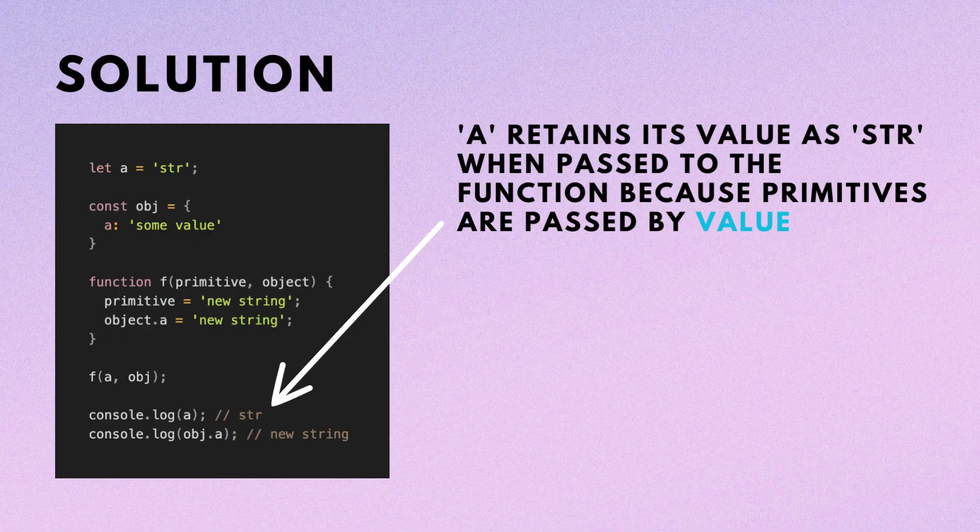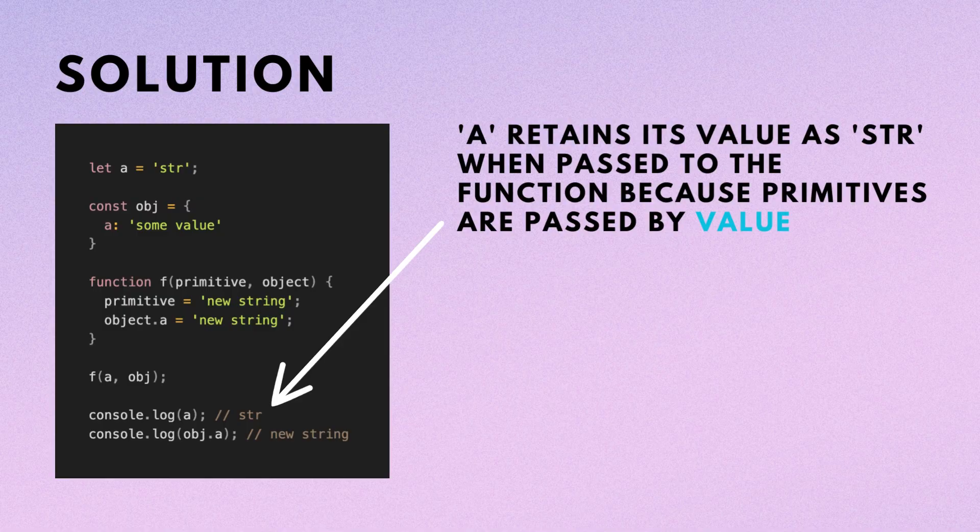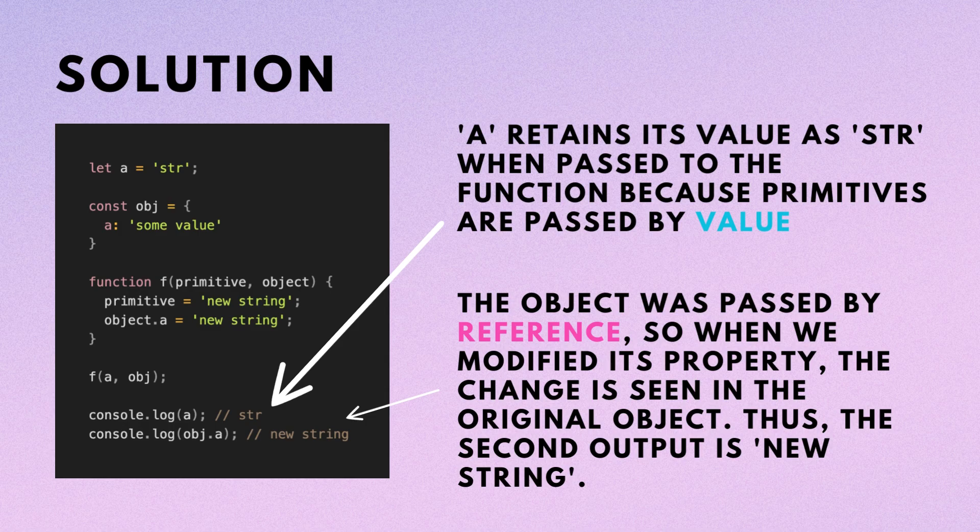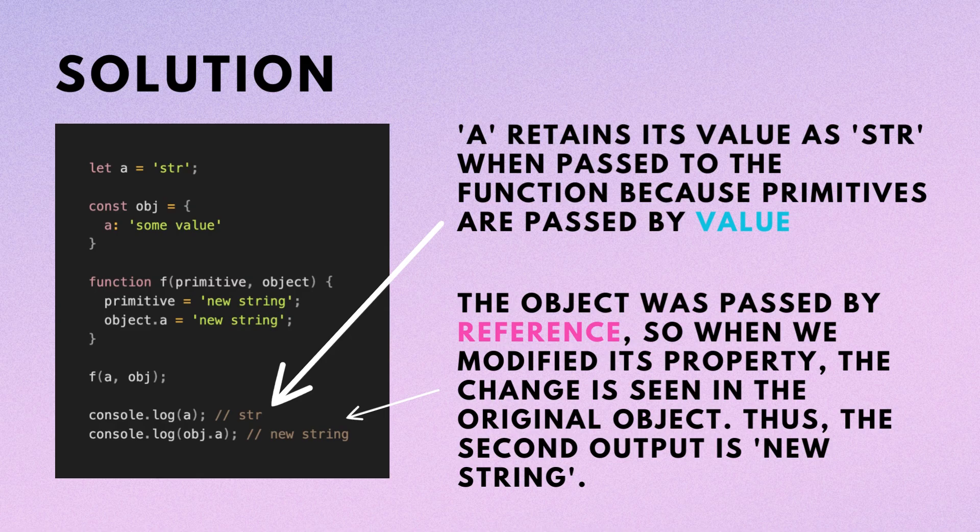Here, a retains its value as str when passed to the function, because primitives are passed by value. However, the object was passed by reference, so when we modified its property, the change is seen in the original object. Thus, the second output is new string.